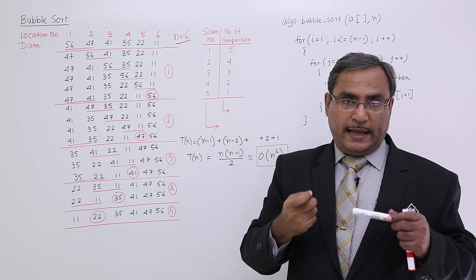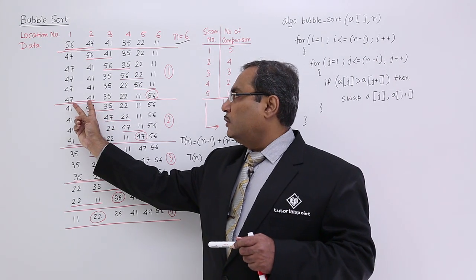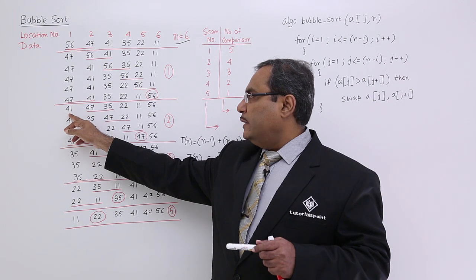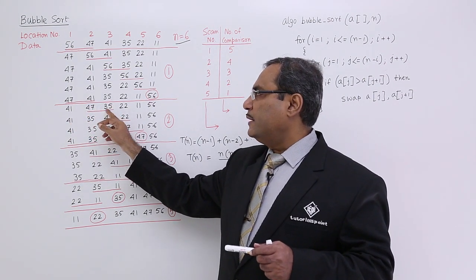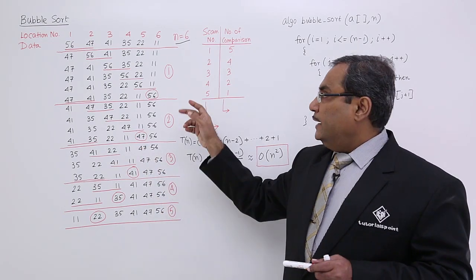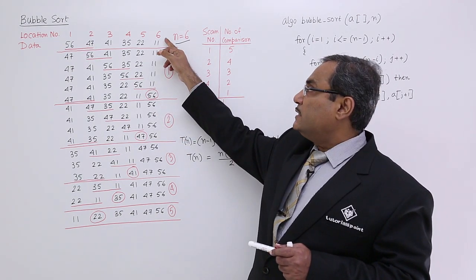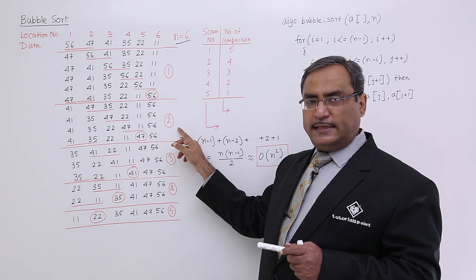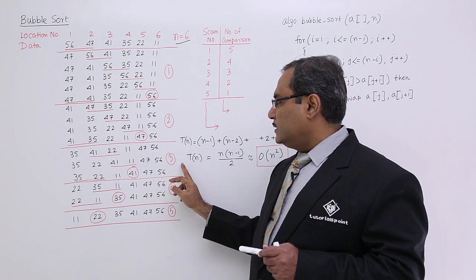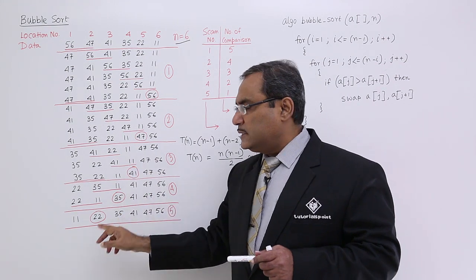The result of scan 1: the highest number is found at the last place, which is correct since we are arranging in ascending order. In scan 2, 47 is compared with 41 — 47 is higher, they get swapped; 47 is higher than 35, they get swapped, and so on. After the first scan, the highest number is at the highest place. After the second scan, the second highest is at the second highest place, and after the third scan, the third highest at the third highest place.